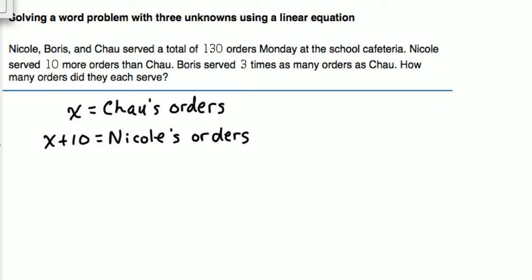We are also told that Boris served three times as many orders as Chao. If Chao served X amount of orders, Boris would have served three times X, which is 3X.